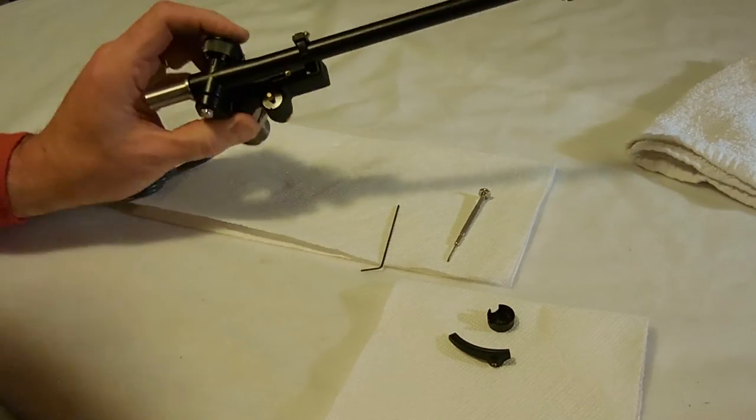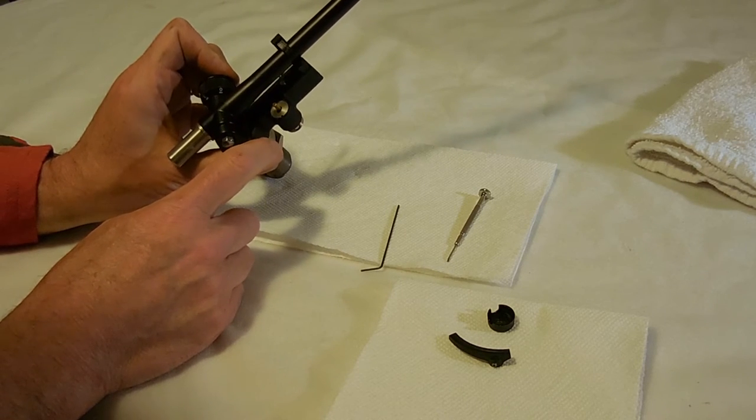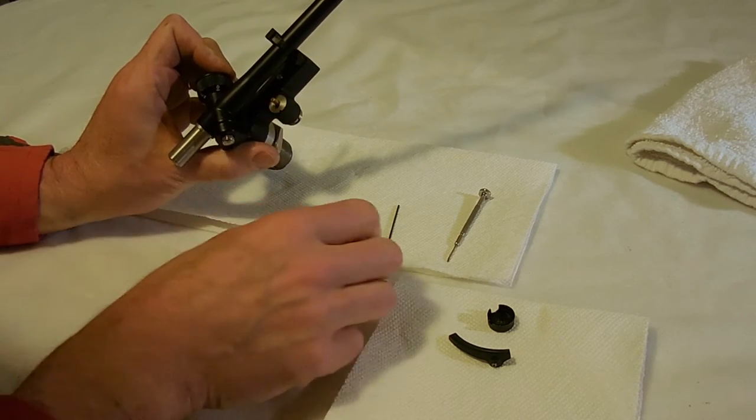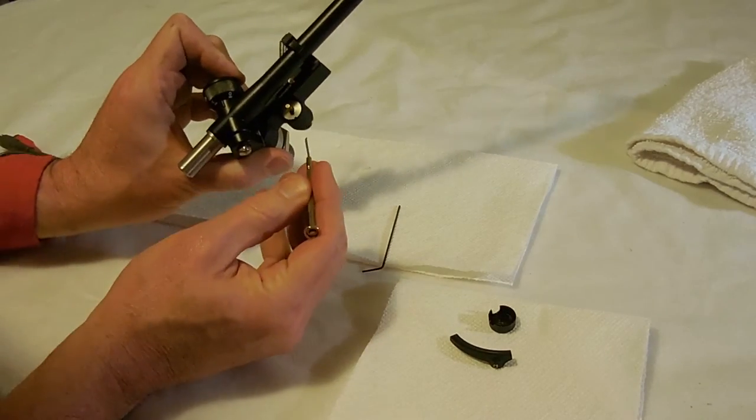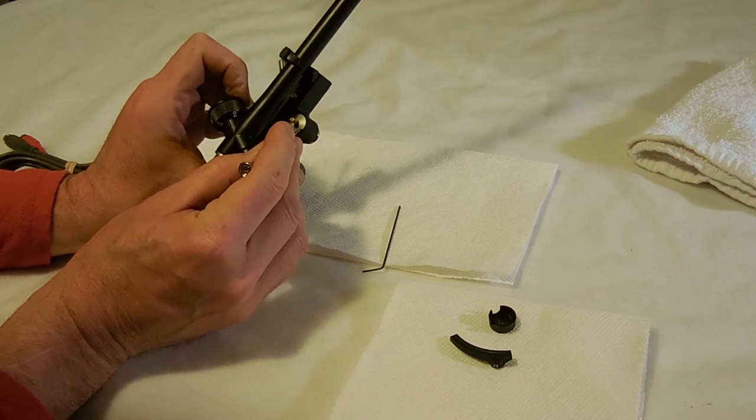And now what you're faced with is this—I don't know if you'd call it a washer, but it's threaded and it's got two tiny holes in it. And you've got to, with the small bladed screwdriver, grab one of those holes and turn counterclockwise.